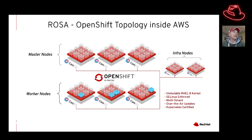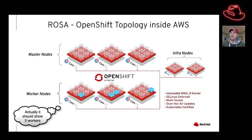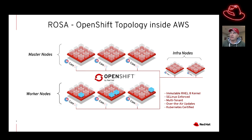So what does the topology look like exactly? As you can see, we've got three master nodes, three worker nodes, and two infrastructure nodes. Each one of these nodes is running the immutable RHEL 8 kernel, otherwise known as CoreOS. It's got SELinux enforcing enabled.